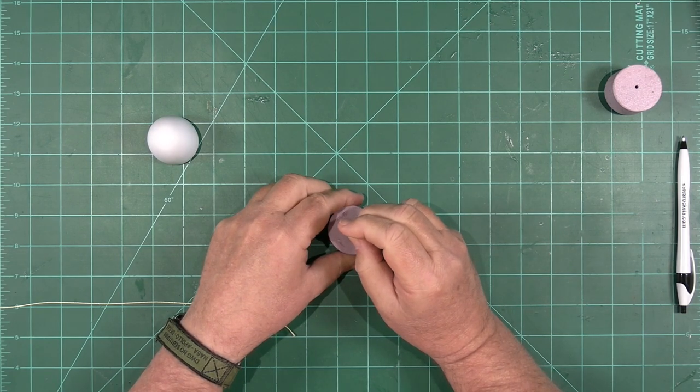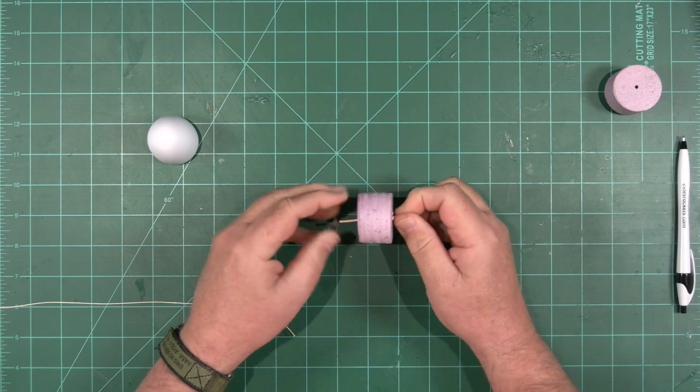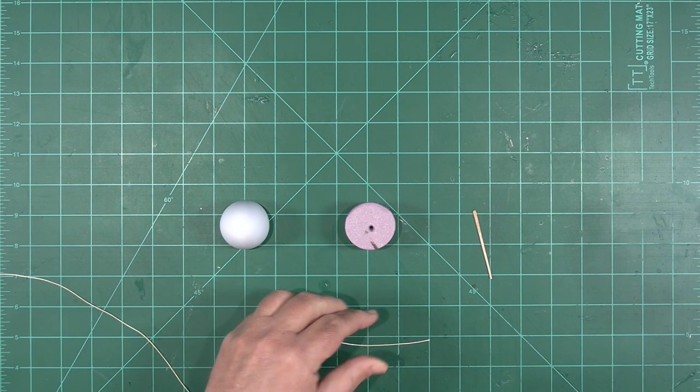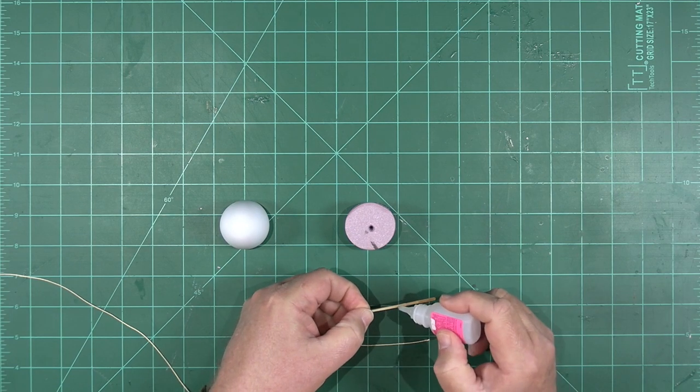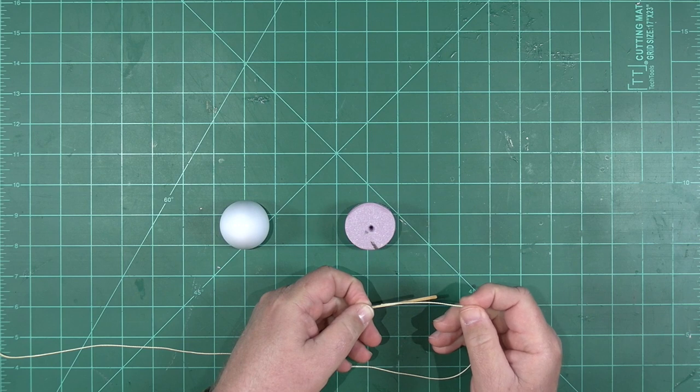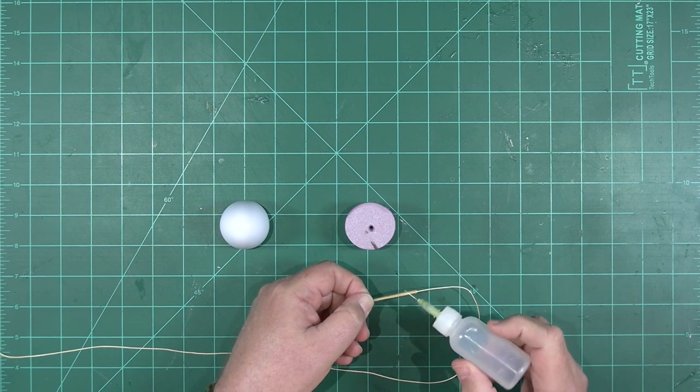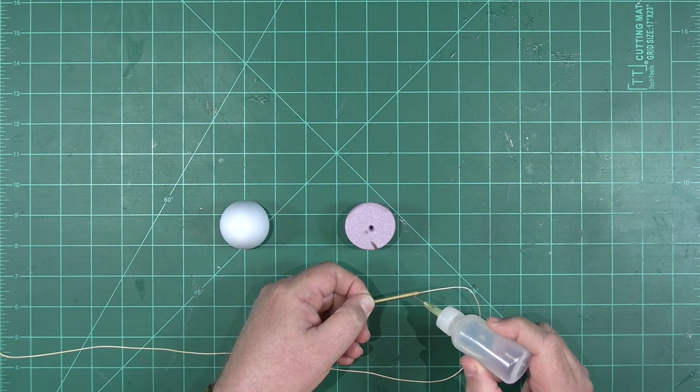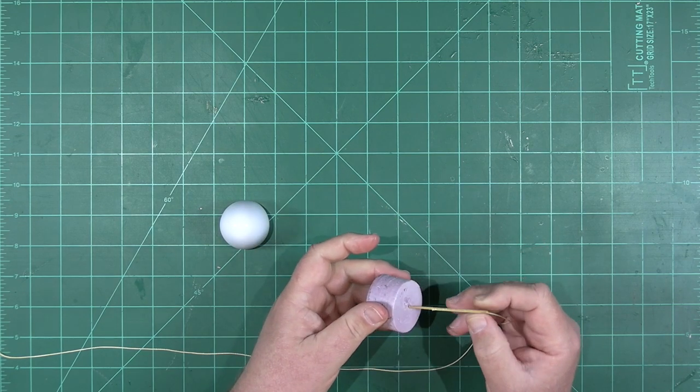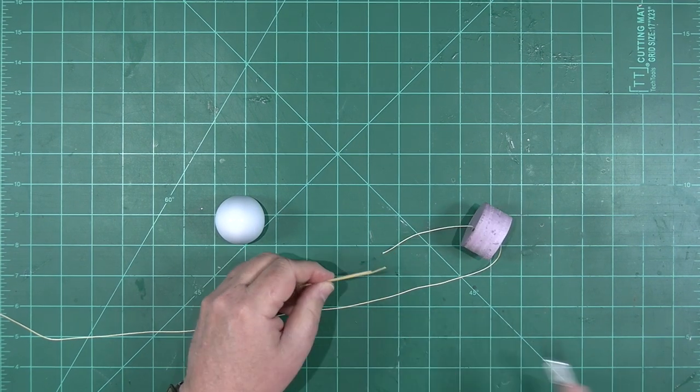Next we're going to use our toothpick to create a hole through the center of one of the foam plugs. Now getting the end of our shock cord through that hole can be a little tricky. So here's what we're going to do. We're going to glue the shock cord to the end of the toothpick and use the toothpick to help us pull it through the hole. We'll hit that with some accelerator. Effectively, we've created a needle and a thread. And it goes right through. Just cut the end off and we're ready to move on.